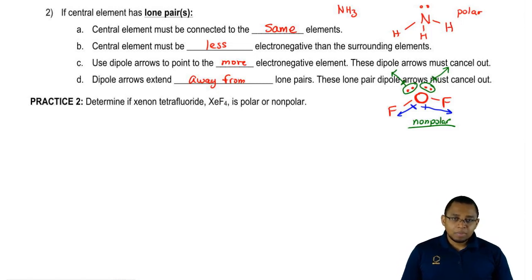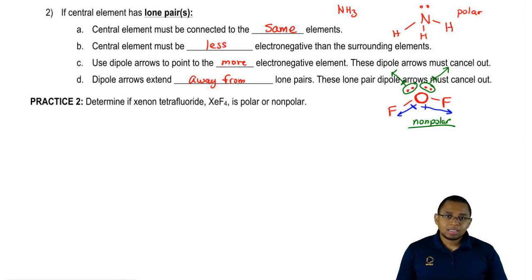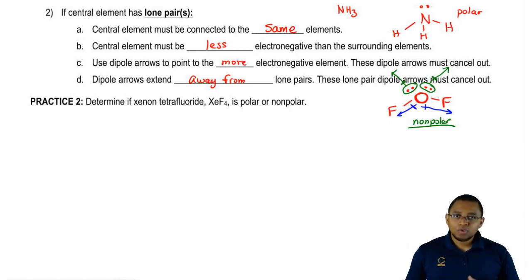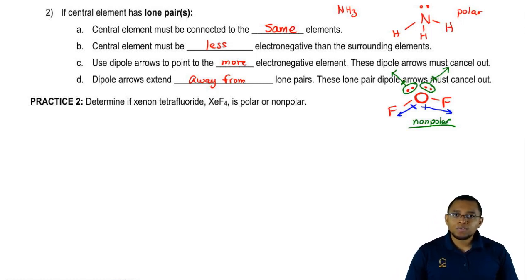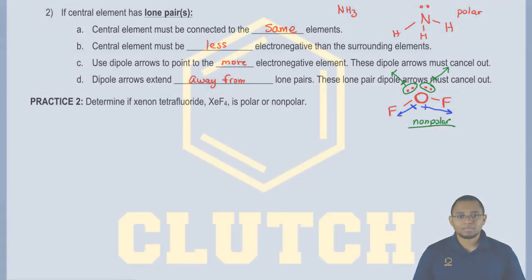I want you guys to take the same approach when you draw xenon tetrafluoride. Draw it out first, see if it has lone pairs, and use the rules from A to D to see what the correct answer would be. Once you do that, click on the explanation button and see what we do to figure out if it's polar or nonpolar.